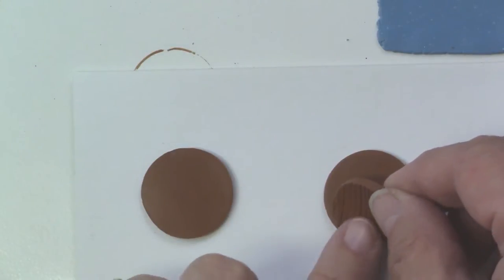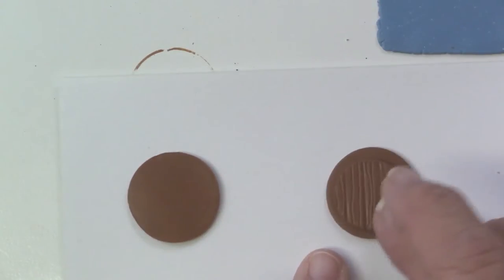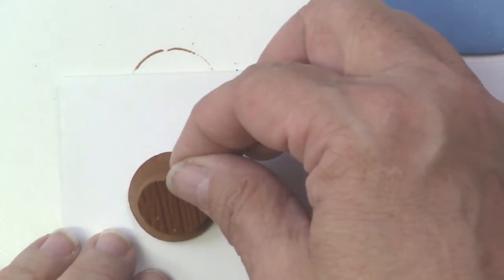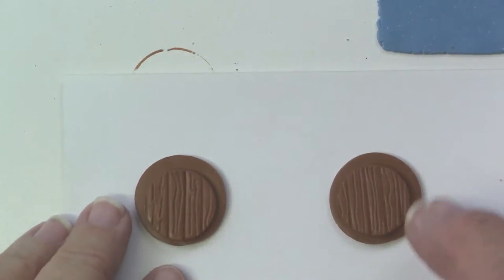And then we'll put the smaller little door, the little wood grain circle on top of the larger one. Not in the center, a little bit towards the bottom so it's not exactly in the center.